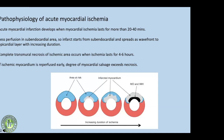Regarding area at risk and myocardial infarction: acute MI develops when myocardial ischemia lasts more than 20 to 40 minutes. With longer ischemia, the infarct progresses from the subendocardium in a wavefront to the epicardial layer. Complete transmural necrosis occurs after four to six hours of ischemia. If this ischemic myocardium is reperfused early — within 24 hours — the degree of myocardial salvage exceeds the necrosis.